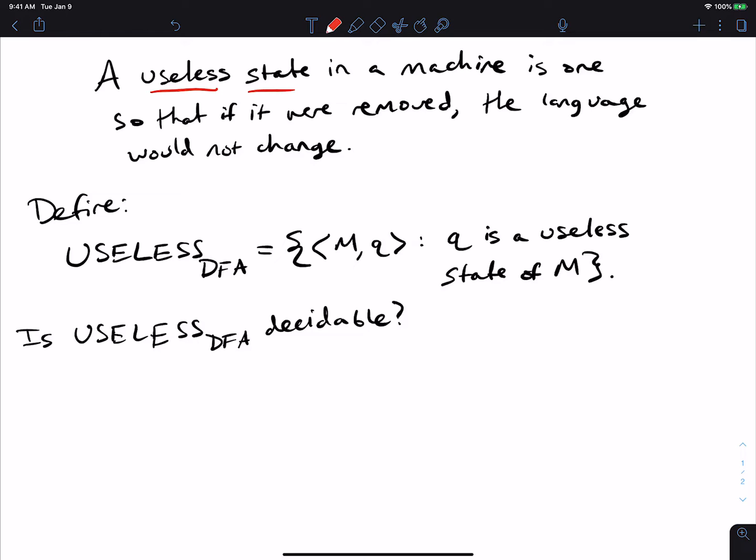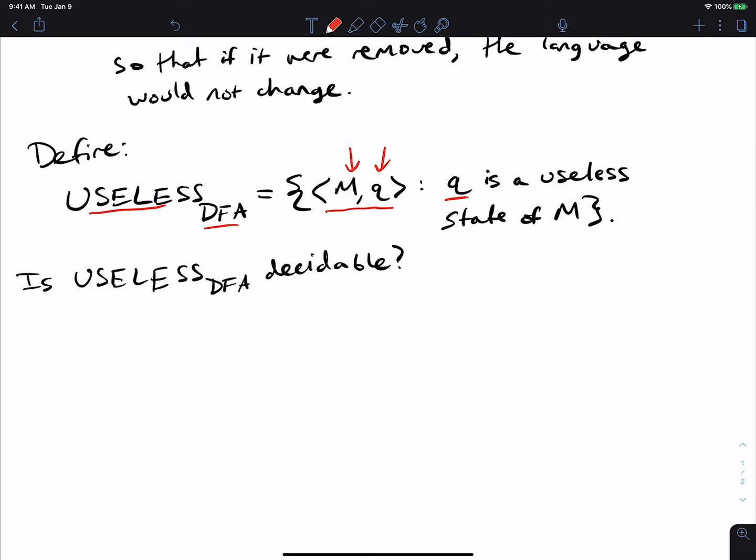We're going to define the language USELESS_DFA to be the set of all strings that encode a DFA and a state of that DFA, such that q is a useless state of that machine. And we want to answer: is USELESS_DFA decidable?